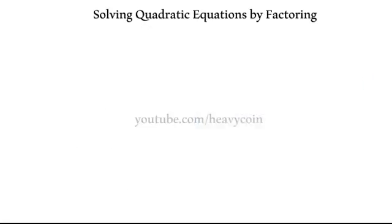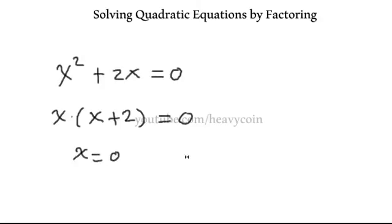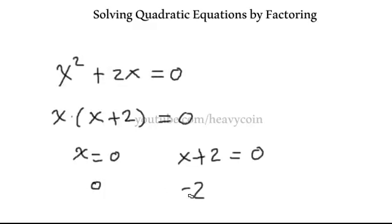Looking at another example: x squared plus 2x equals 0. What numbers can we plug in to get 0 out? We factor out an x and we're left with x(x + 2) = 0. Setting each factor equal to 0: x = 0 is one solution, and x + 2 = 0 gives x = negative 2, because negative 2 plus 2 is 0. So the solutions are 0 and negative 2.